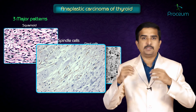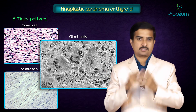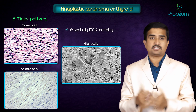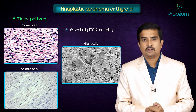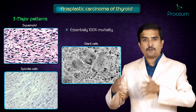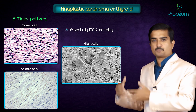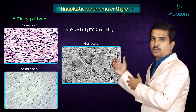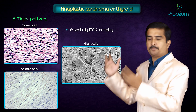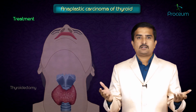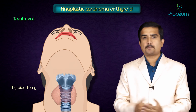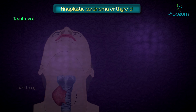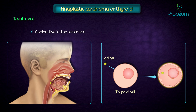All three patterns carry essentially 100% mortality. You can see pleomorphic giant cells, spindle cells, and small anaplastic cells on histology. The treatment options are thyroidectomy or lobectomy along with radioactive iodine treatment.